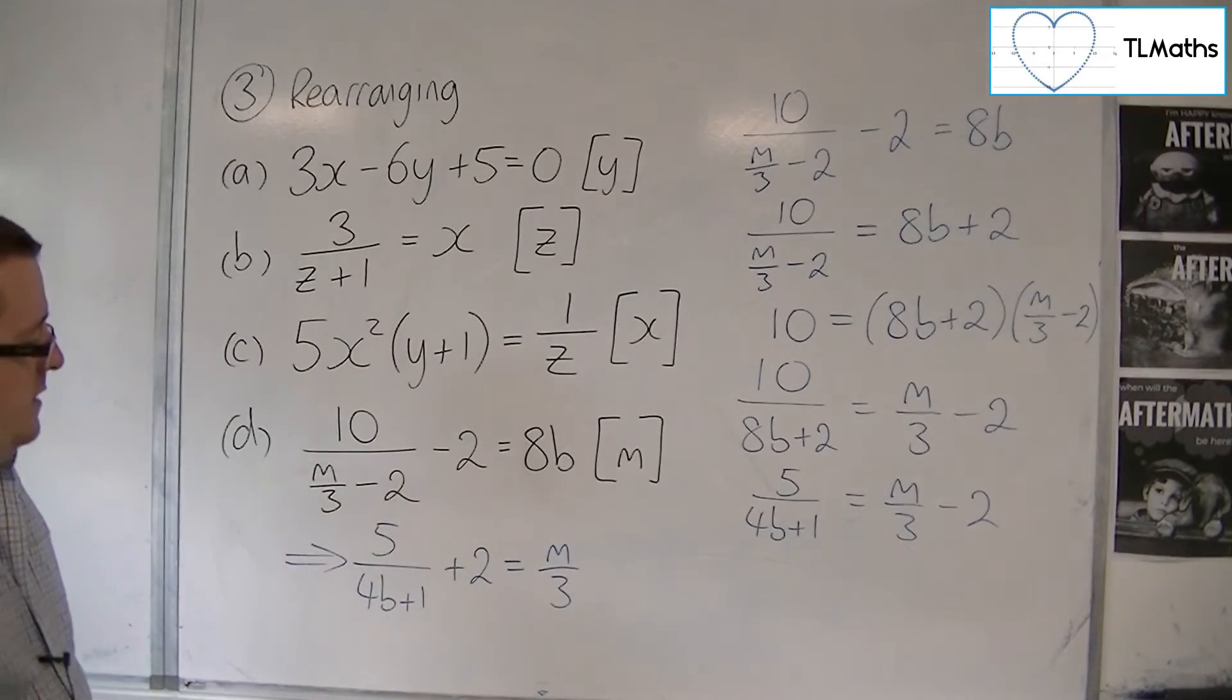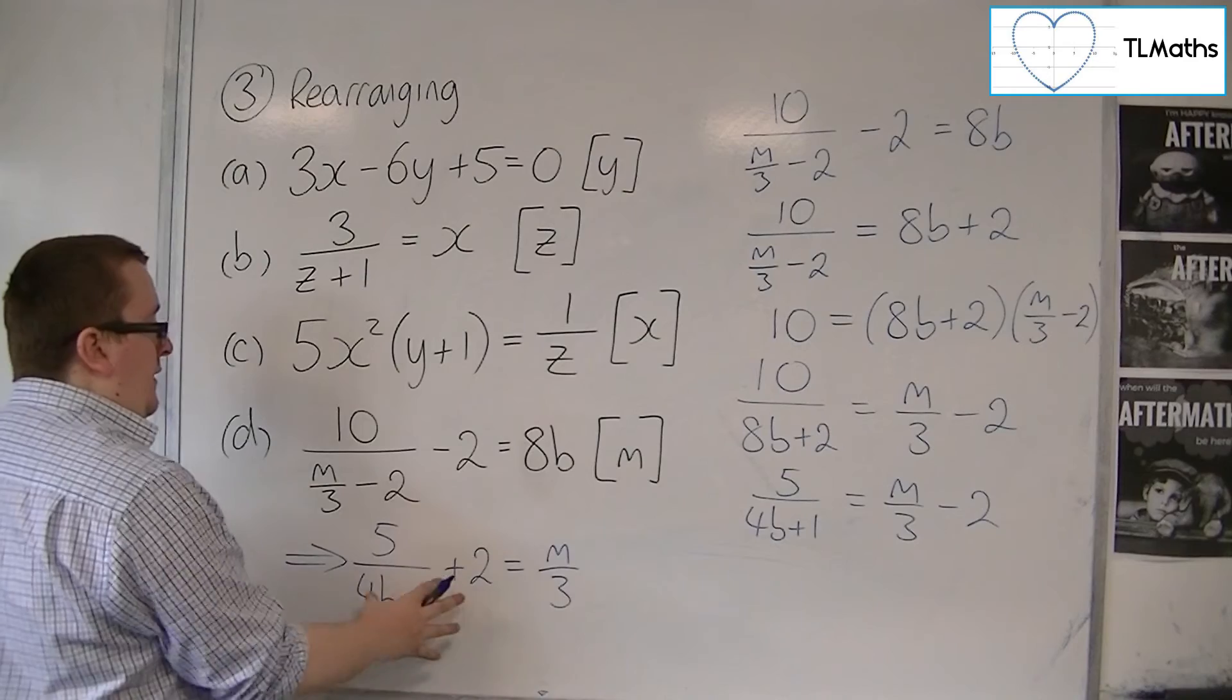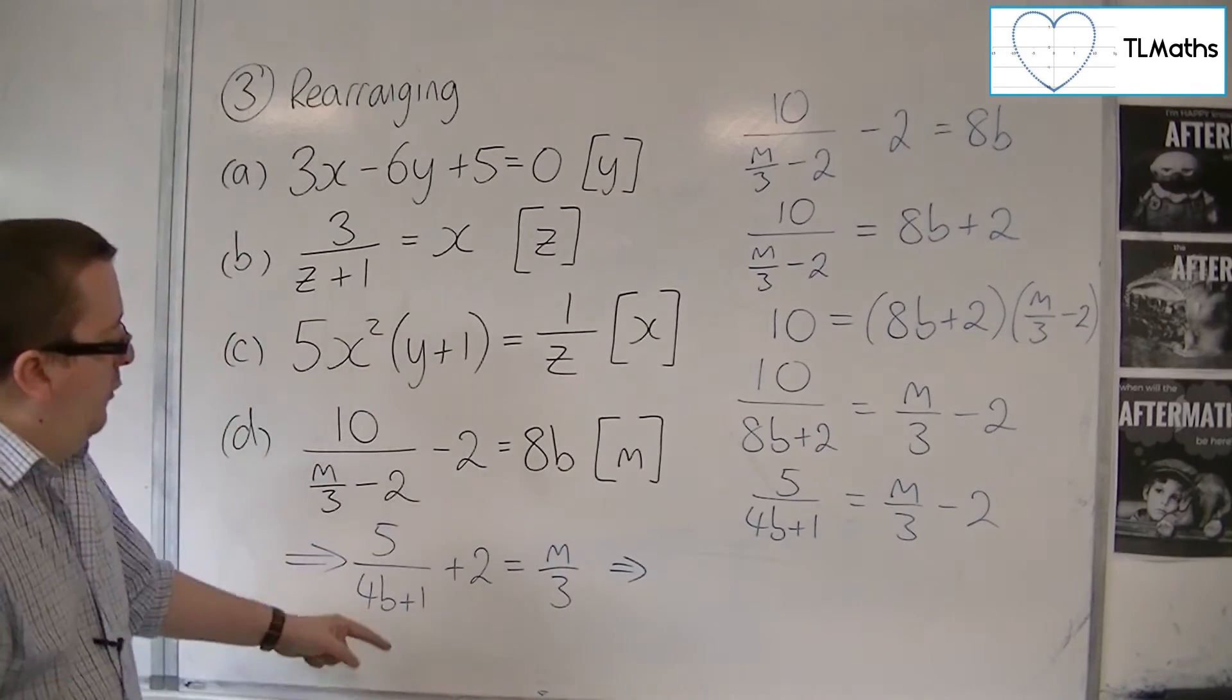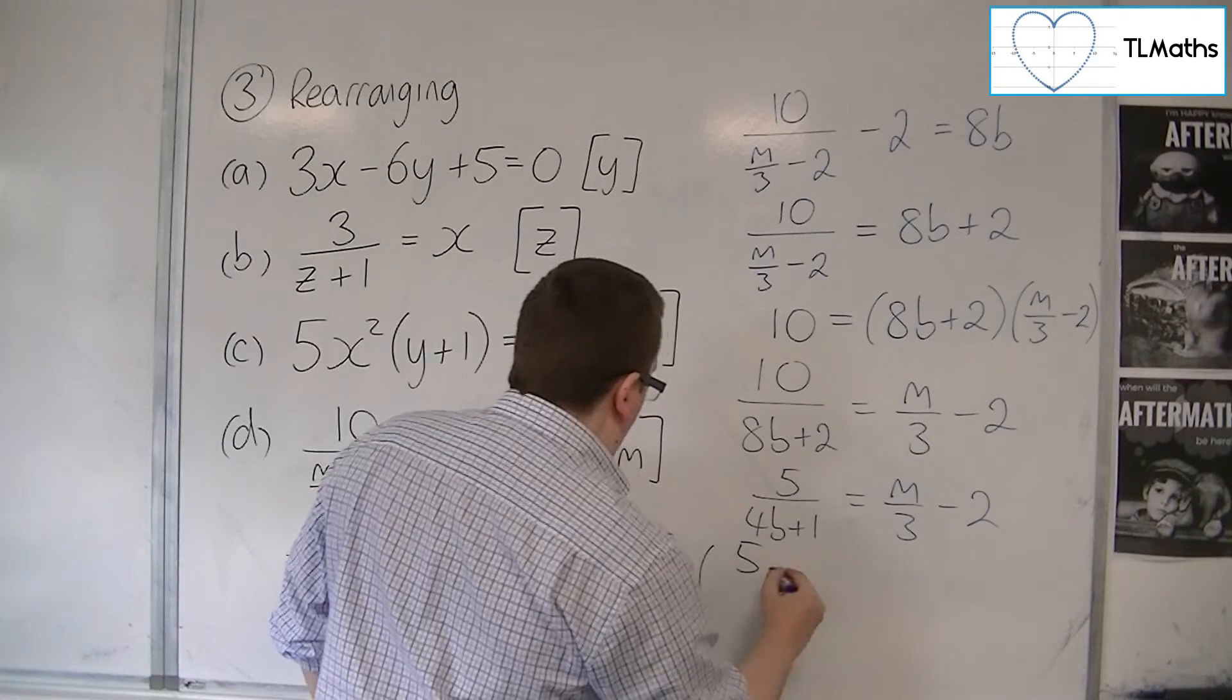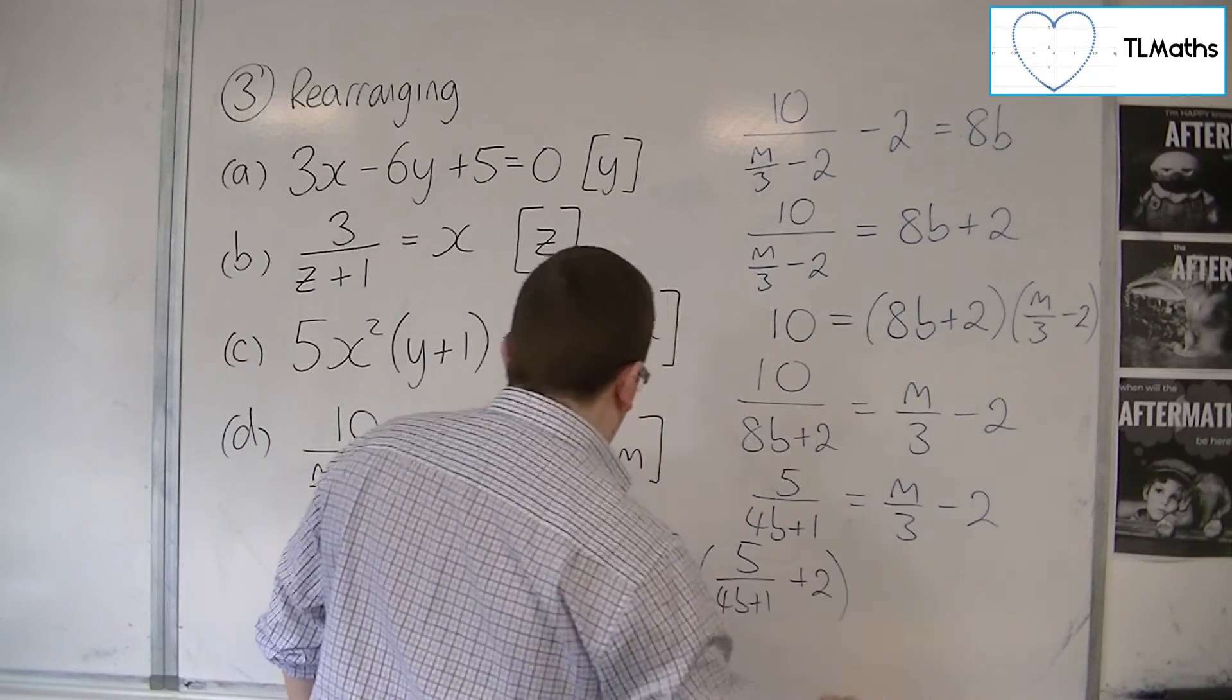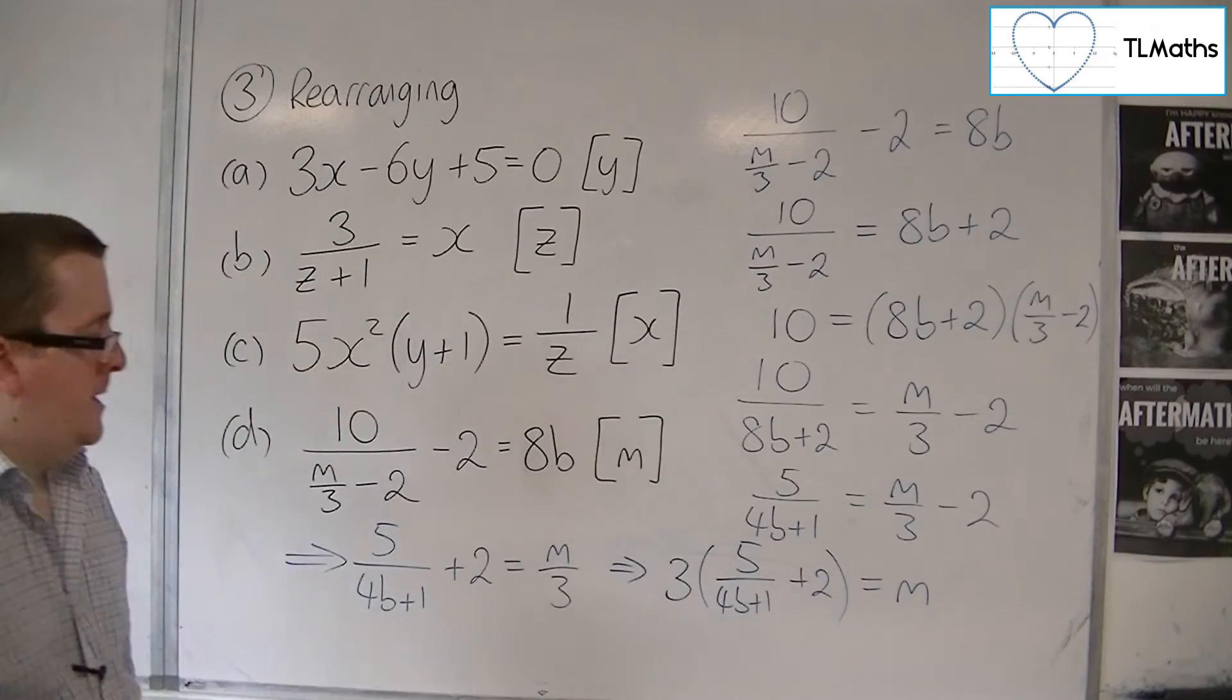And then I'm one step away because now that I've got M over 3 is this, I can multiply both sides by 3 to get M. So multiplying both sides by 3, we get 3 lots of 5 over 4B plus 1 plus 2 is equal to M.